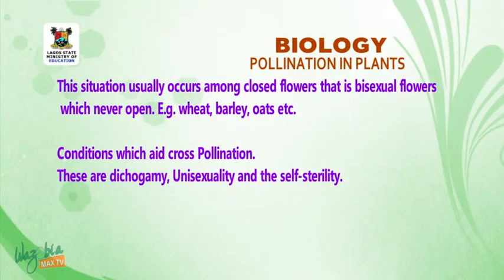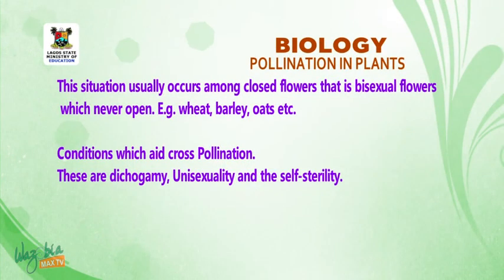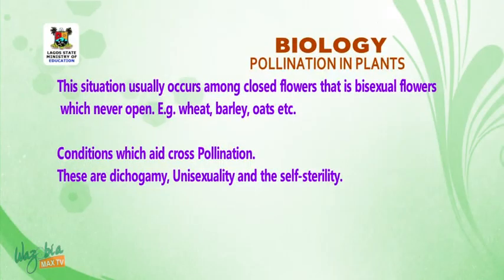Conditions which aid cross-pollination include dichogamy, unisexuality, and self-sterility.